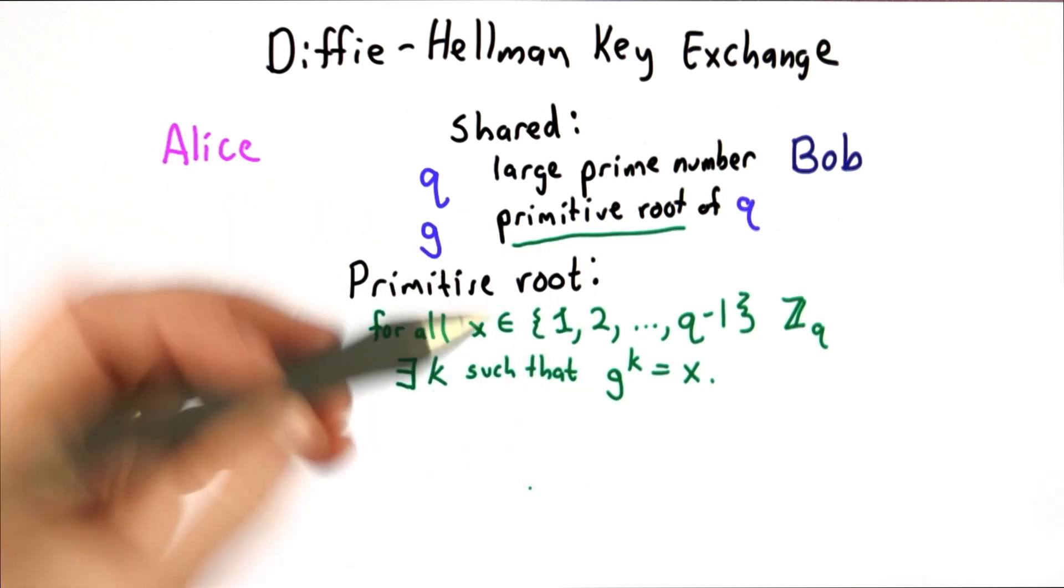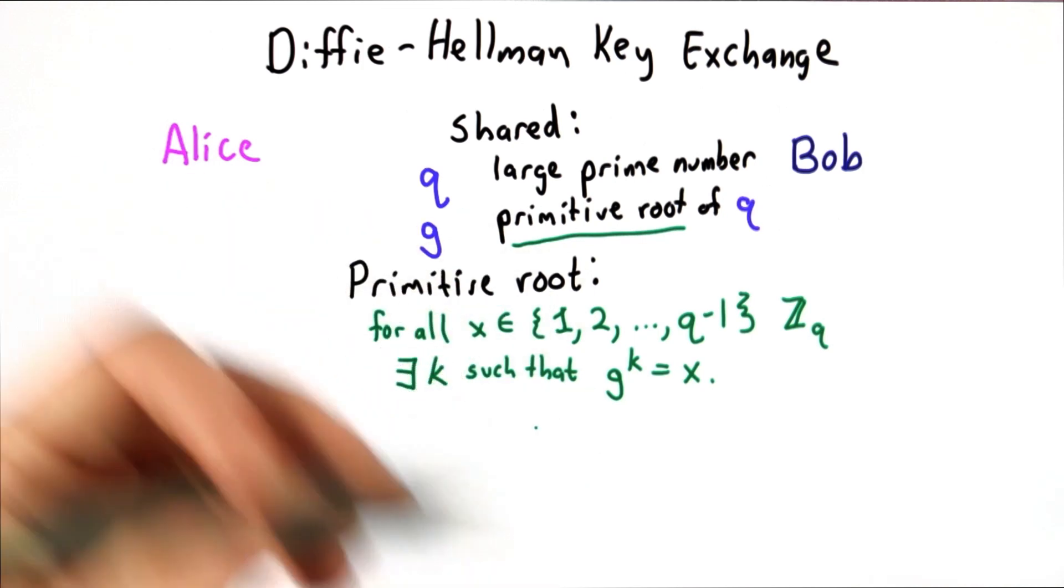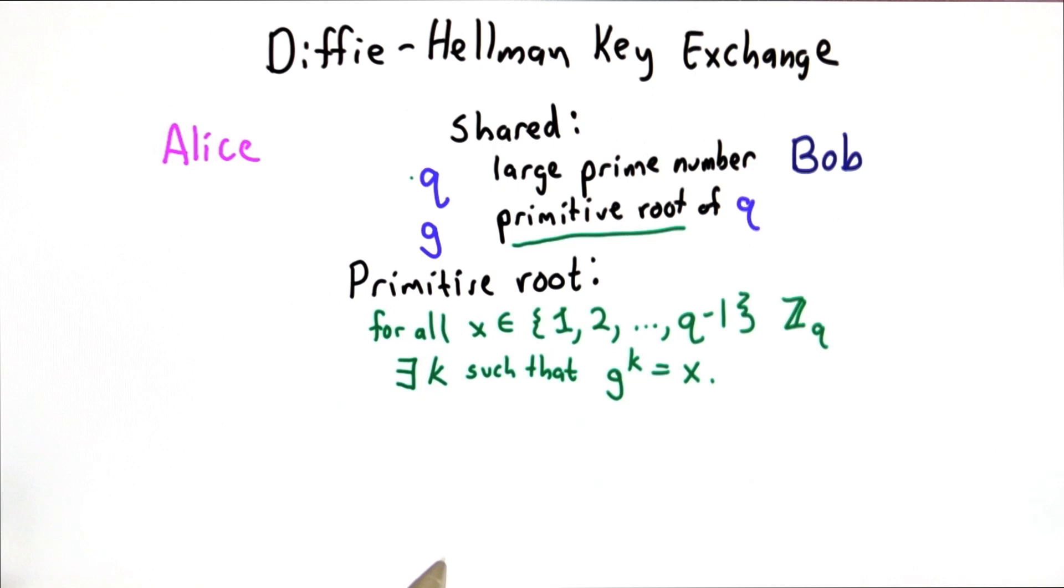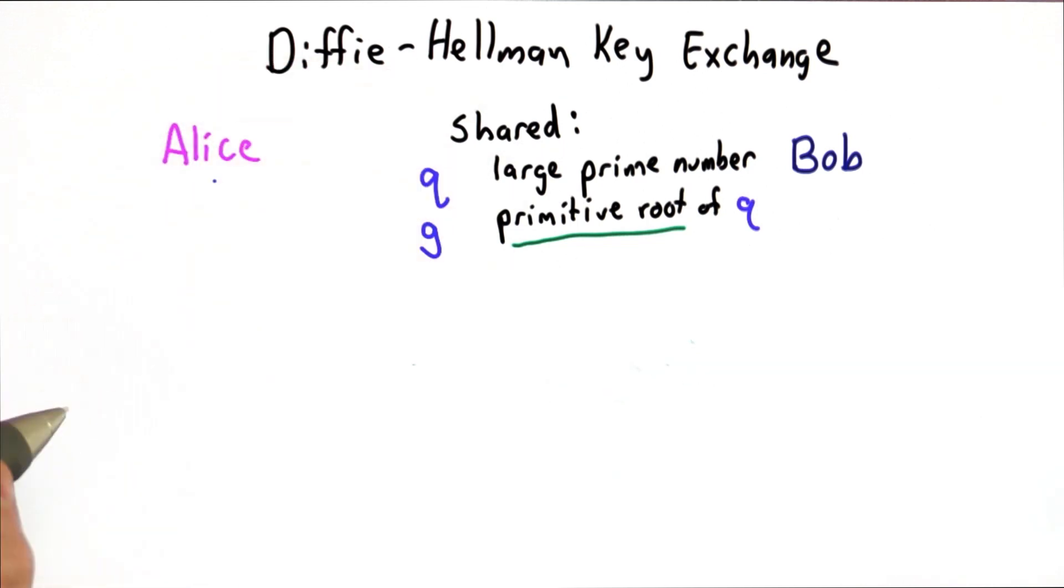We can think of a brute force way of trying numbers until we find one. That would be very expensive for a large prime number, but there are more efficient ways to find them, which we won't talk about. So that's what they start with, those two things. And then here's how the protocol works.